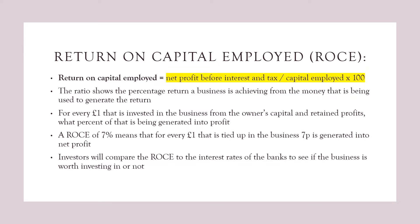Return on capital employed. Return on capital employed is net profit before interest and tax divided by the capital employed times that by 100. This ratio shows the percentage return a business is achieving from the money being used to generate that return. So for every £1 invested in the business from the owner's capital and retained profit, a ROCE of 7% means that 7p of it is generated into net profit. Investors will compare ROCE to bank interest rates to see if the business is actually worth investing in.